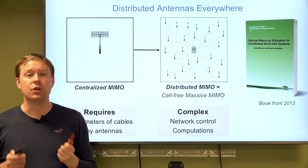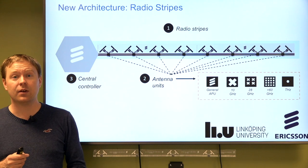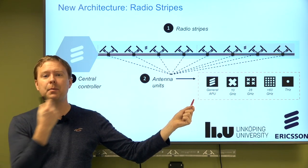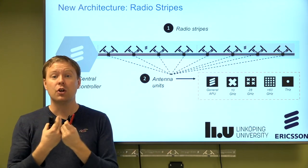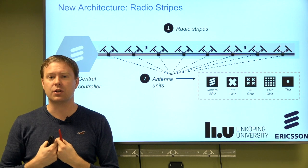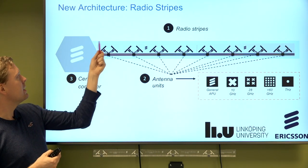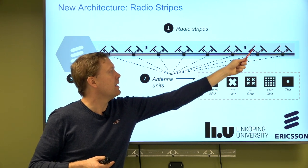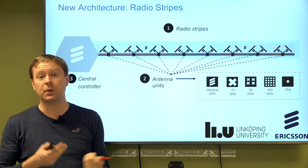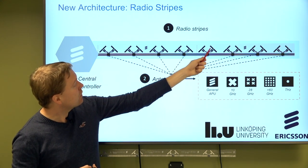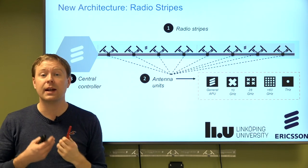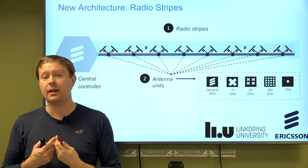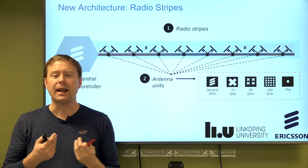This is where our new invention called radio stripes comes in. The idea: if you want to put an antenna at a particular location and draw a cable there, why have a passive cable? Why not put many antennas within the cable and turn the entire cable into part of your network architecture? The radio stripe is a long stripe containing a cable and antennas — for example for the 3.5 GHz band typical in 5G — connected to antenna processing units containing all the necessary hardware: filters, analog-to-digital converters, digital downconverters, and so on.